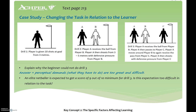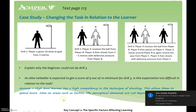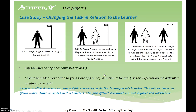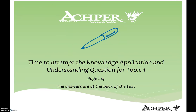An elite netball player is expected to score 9 out of 10 for drill three. A high-level learner has high competency in shooting technique, allowing them to spend more time on tactics. Cognitive learners can't manage the tactical side, whereas autonomous learners can take in the relevant stimulus, use selective attention, and consistently execute skills. Students should now answer questions on pages 2.10 and 2.11.